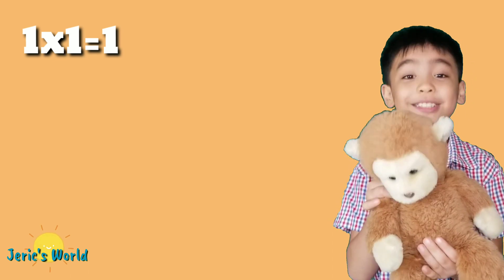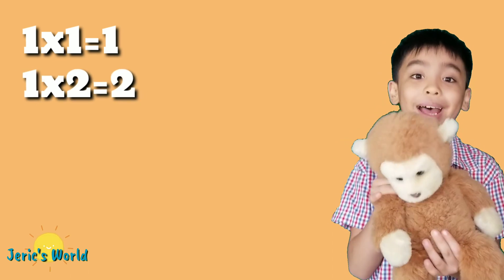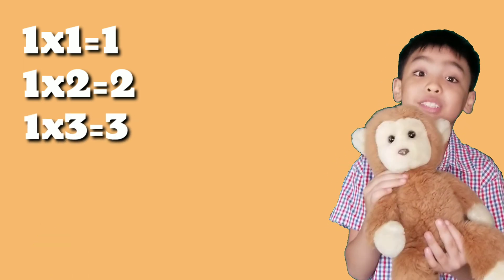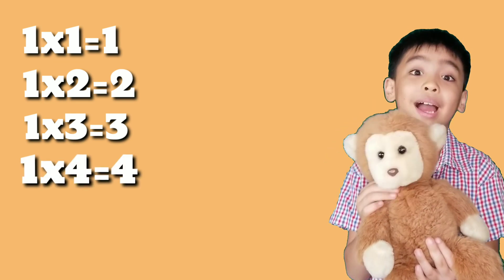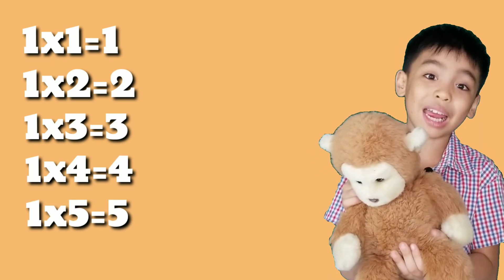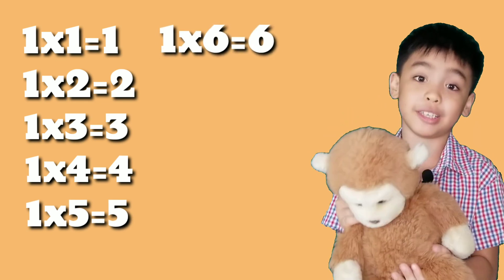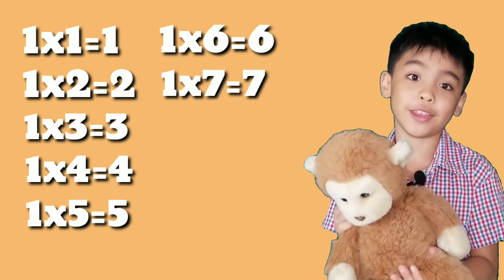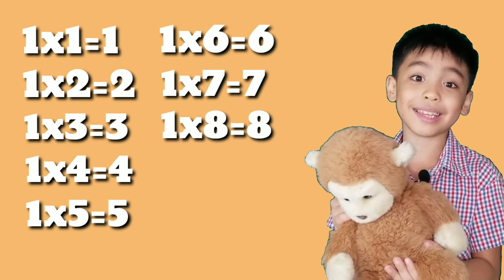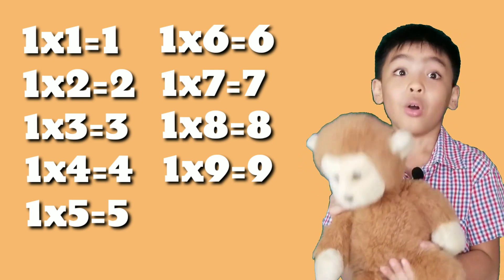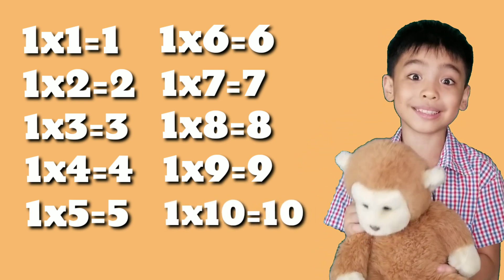Table of 1. 1 times 1 equals 1. 1 times 2 equals 2. 1 times 3 equals 3. 1 times 4 equals 4. 1 times 5 equals 5. 1 times 6 equals 6. 1 times 7 equals 7. 1 times 8 equals 8. 1 times 9 equals 9. 1 times 10 equals 10.